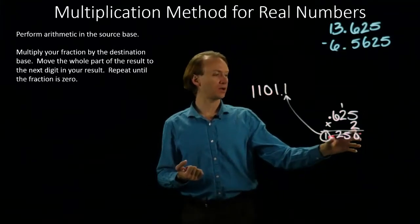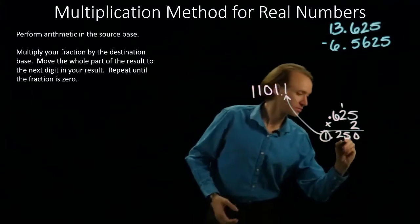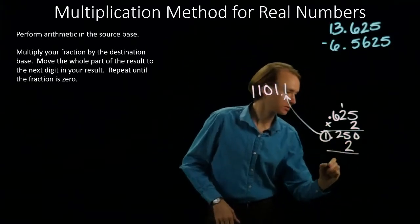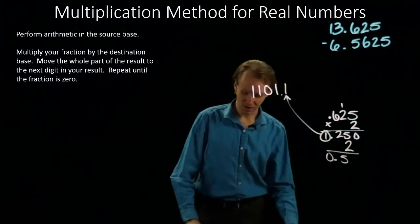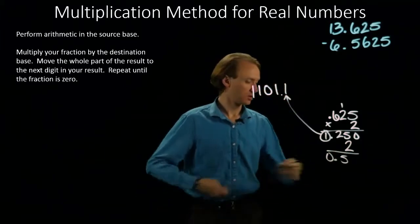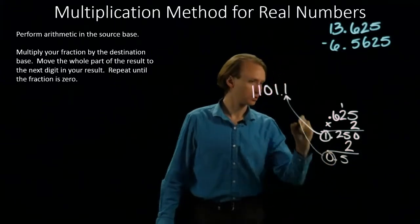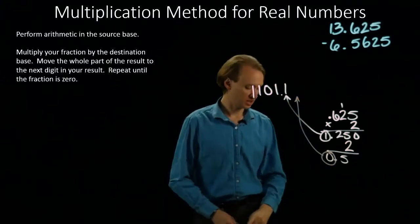I now go back and multiply this by 2 again. This will give me 0.5. And I will take this 0 and copy it up here as my second bit.